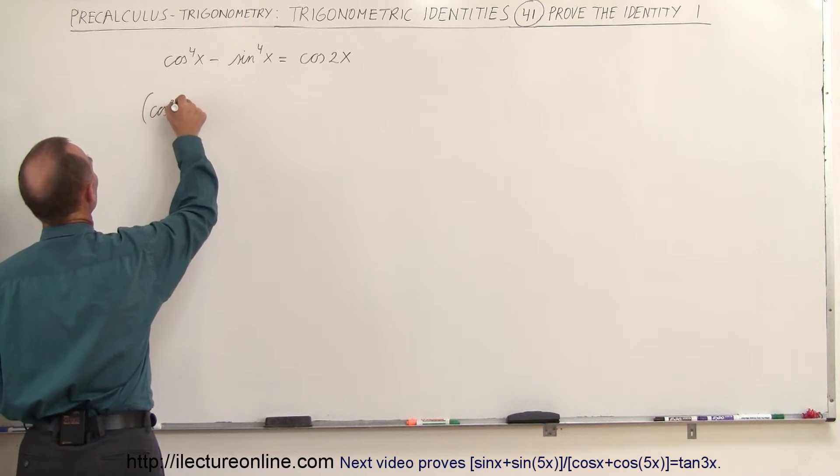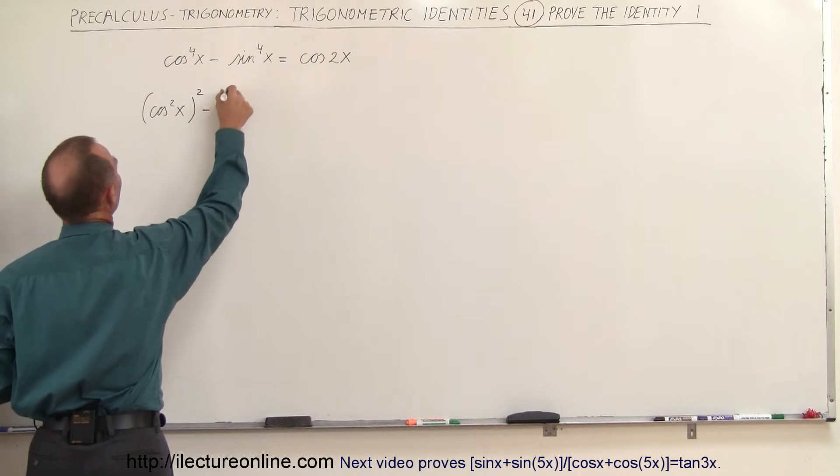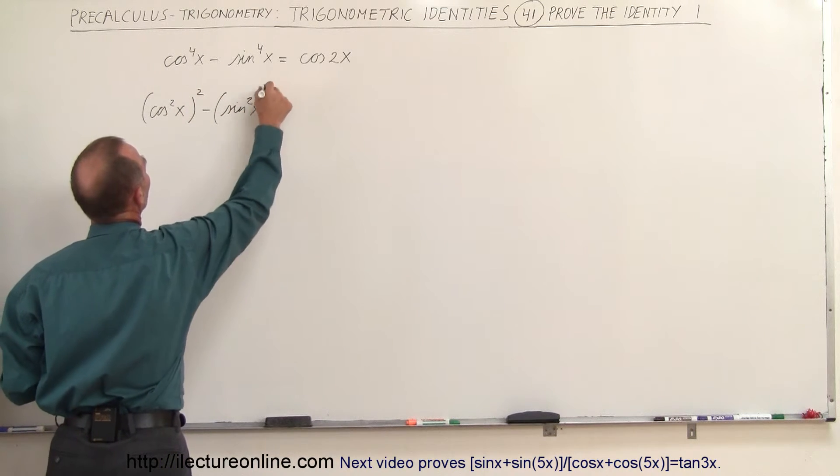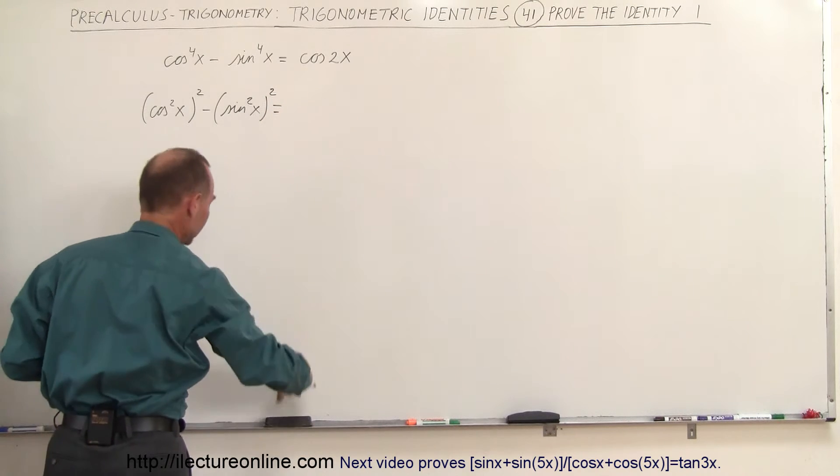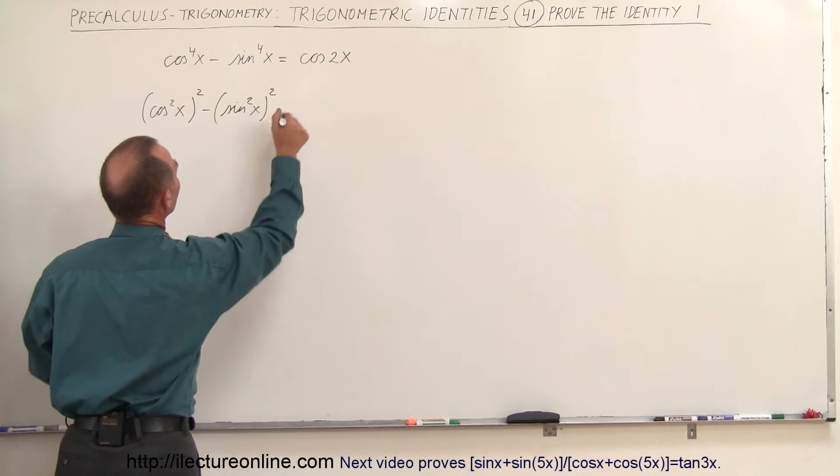What if we have the cosine squared of x, quantity squared, minus the sine squared of x, quantity squared equals... yeah I can go ahead and put the equal sign there.